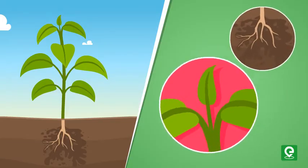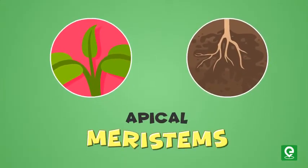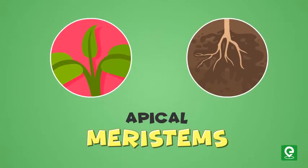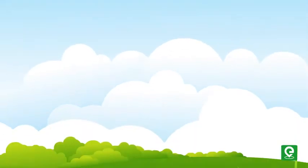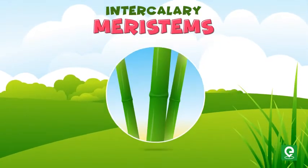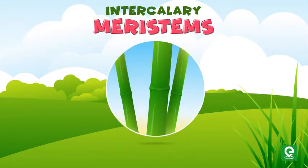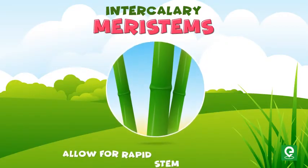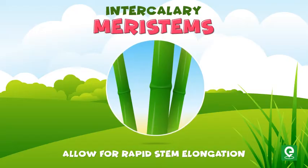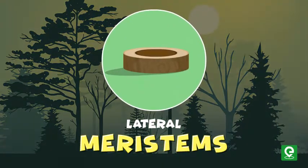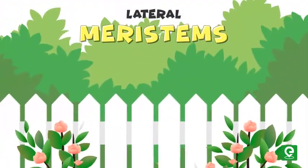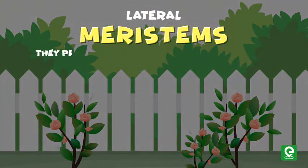The meristems which occur at the tips of the roots and shoots are called apical meristems, and these tissues help in elongation of stem and root. Intercalary meristems are present at the nodes of grasses and allow for rapid stem elongation. Lateral meristems are found in all woody plants and in some herbaceous plants.